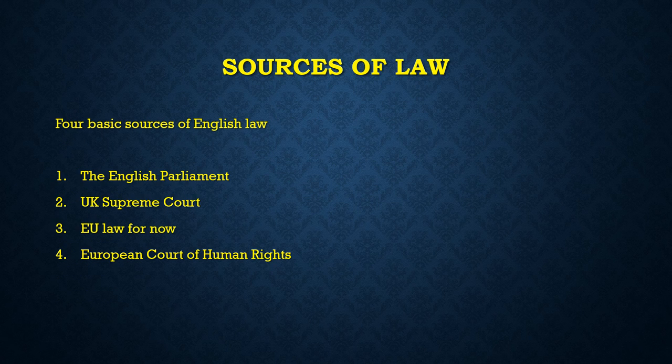At this point, we need to have a sense of where the laws are coming from — what are the sources of laws that we deal with here? There are currently basically four sources of English law: one, the English Parliament; two, the UK Supreme Court and below that the Royal Courts of Justice, the Common Law Courts.